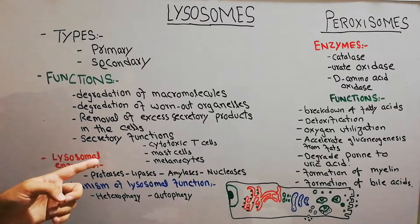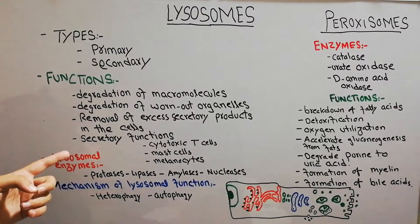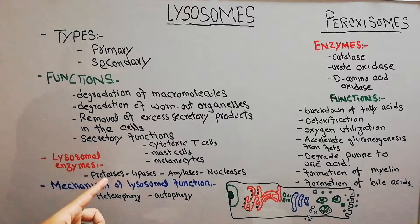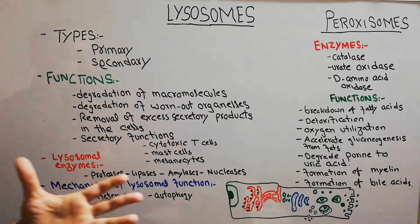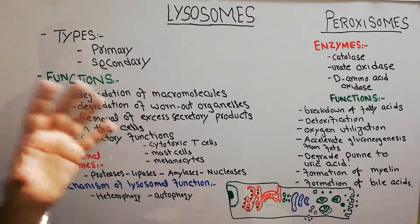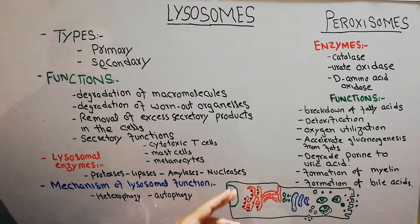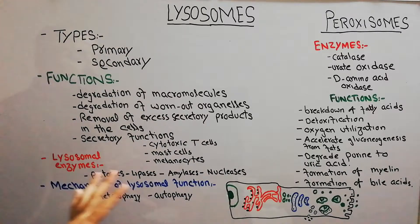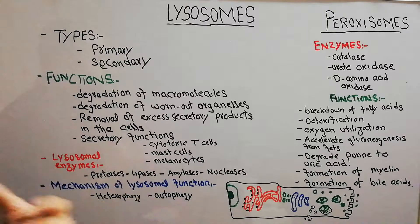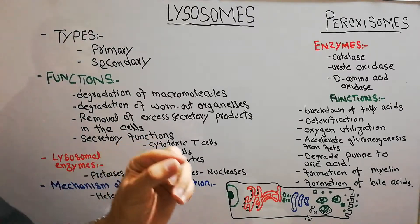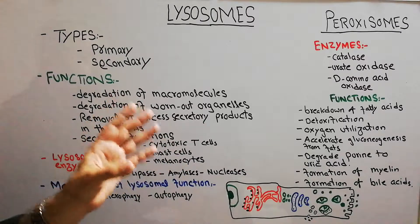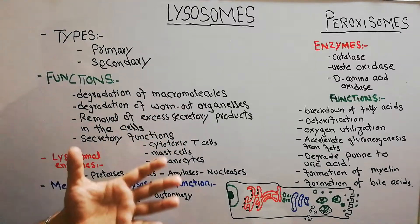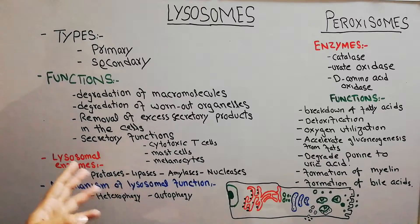Some hydrolases are known as proteases, which break down proteins into amino acids. Some are known as lipases, which break down fats or lipids into fatty acids. Then amylases break down sugars or carbohydrates, and nucleases break down nucleic acids. These hydrolases hydrolyze or digest by combining hydrogen or hydroxyl ions from water with different molecules of food or organelles.